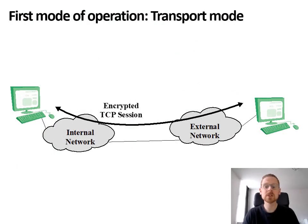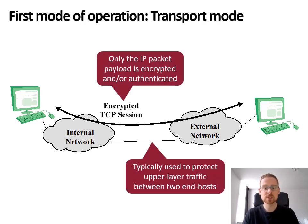To enable these different usage scenarios, IPsec has two modes of operation. The first one is called transport mode. Transport mode is most suitable for protecting upper layer traffic between two end hosts that are directly communicating with one another. It only encrypts the payload of the IP packets and not the header.